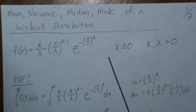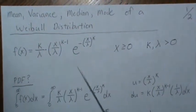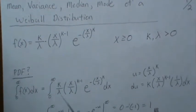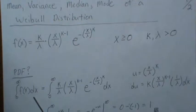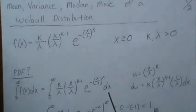So first let's show it is a PDF, that means it integrates to 1 over its domain. So we take the integral from 0 to infinity of f of x dx, so we plug this in and we get this.